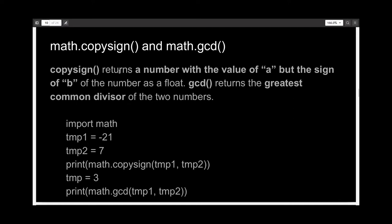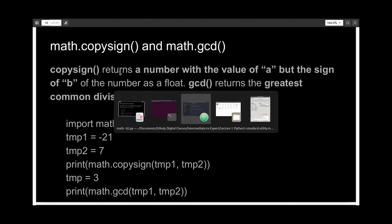Then we have copysign, which returns a number with the value of its first argument with the sign of the second argument. The other function we have is gcd, which will return the greatest common divisor of two numbers.